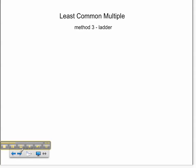Now, let's use the ladder method to find the least common multiple of 12 and 16. Just like with GCF, we're going to use our upside down division sign and find a common factor.